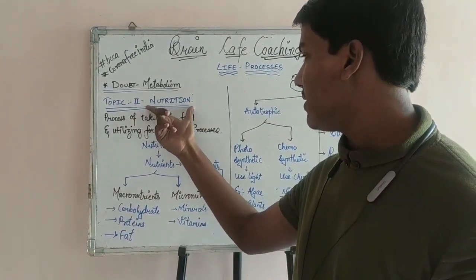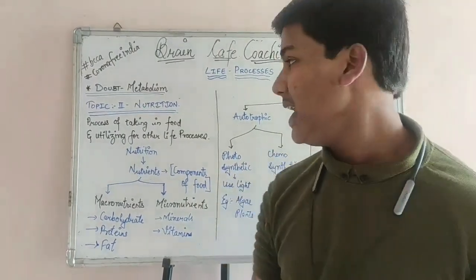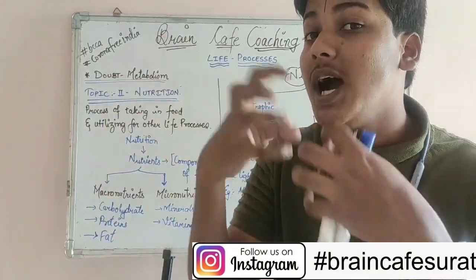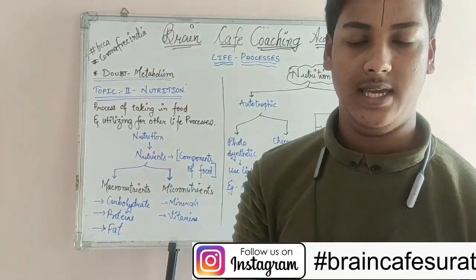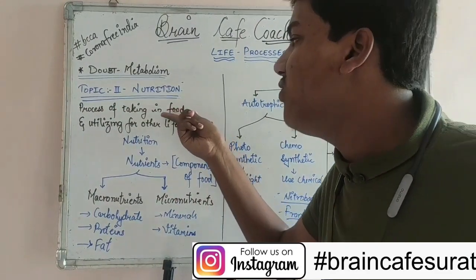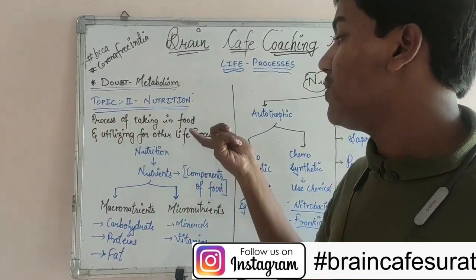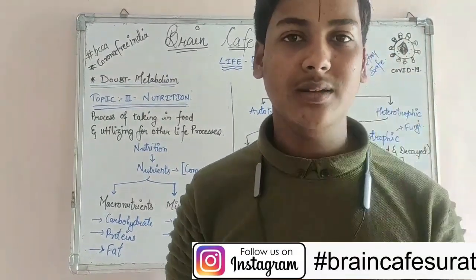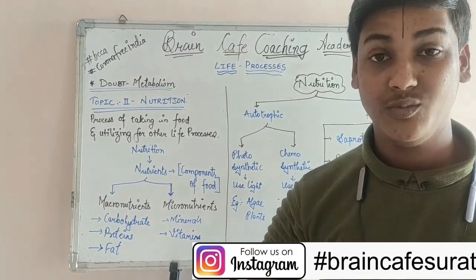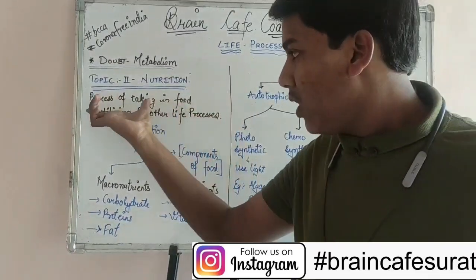The second topic of the chapter is nutrition. Nutrition is a life process. Nutrition is a process in which we eat organic food — it is the process of taking in food and utilizing it for other life processes. We eat food, use it to sustain life, develop energy, and carry out our body's functions.